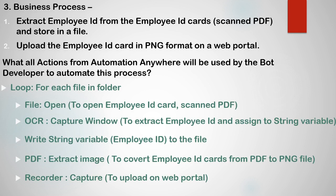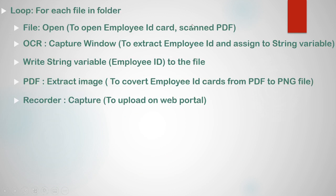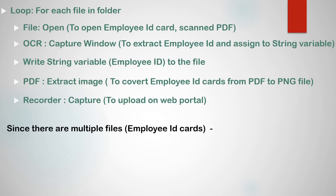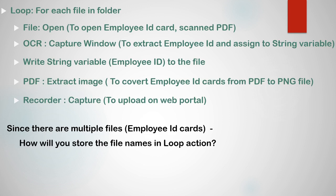There could also be a follow-up question with this question. If you have provided all these answers correctly, you could be asked: since there are multiple employee ID cards, how will you store the file names in the loop action? In the loop action, we are going to use a dictionary variable which stores files as key-value pairs. The key to store the file name will be 'name' and the key to store the extension will be 'extension'.